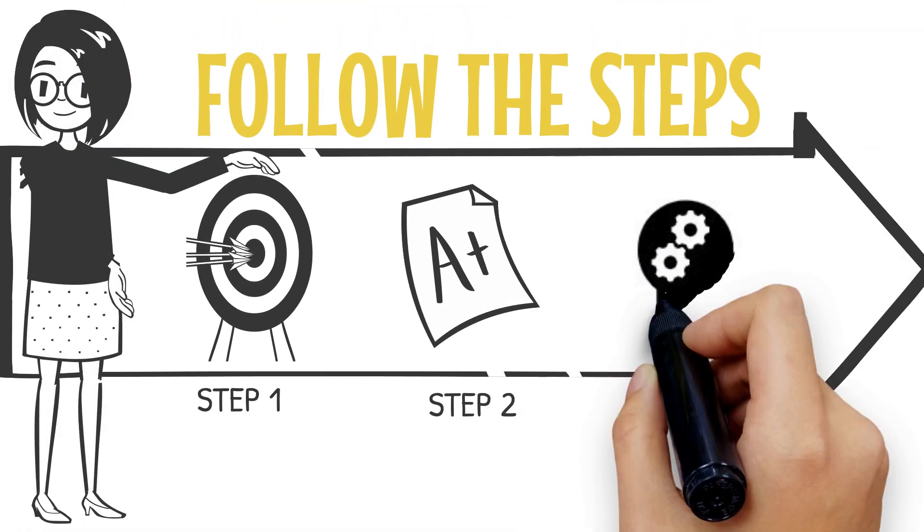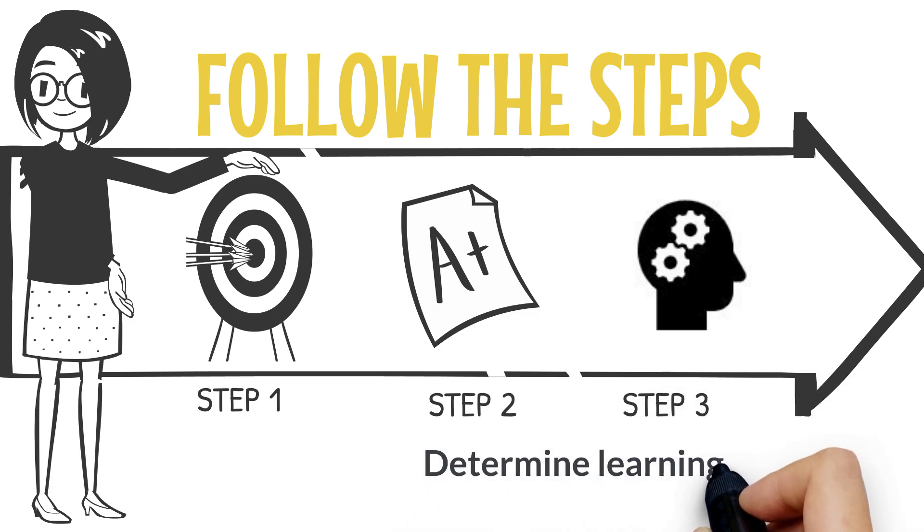This brings us to step three of backwards course design: Determine learning activities and methods of instruction.